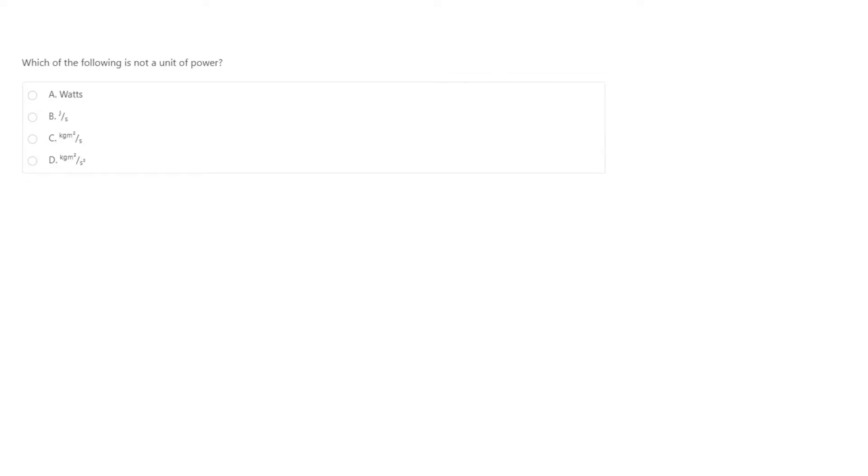Which of the following is not a unit of power? A, watts, B, joules per second, C, kilograms times meters squared per second, or D, kilograms times meters squared per seconds cubed.